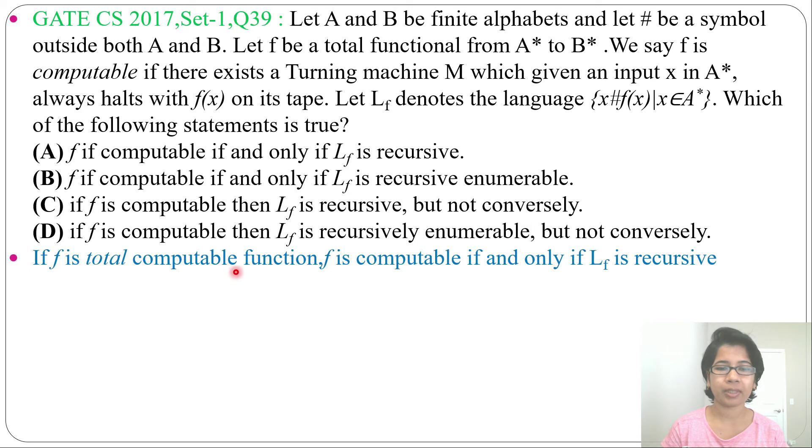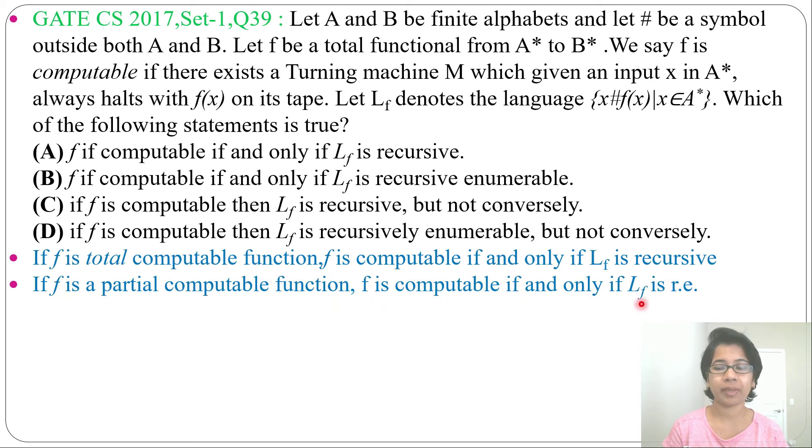If f is a total computable function, f is computable if and only if L_f is recursive. If it is total computable means it is recursive. If f is a partial computable function, then f is computable if and only if L_f is recursive enumerable. Total computable means recursive, decidable. Partial computable means recursive enumerable and undecidable.